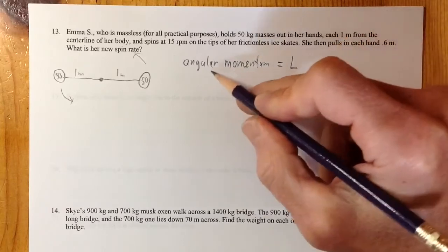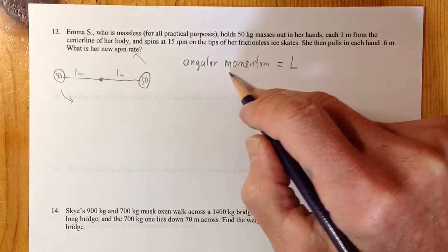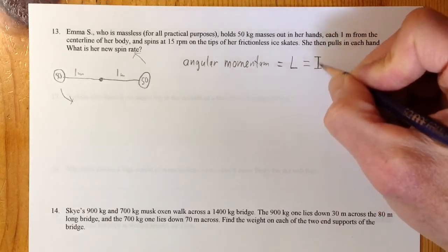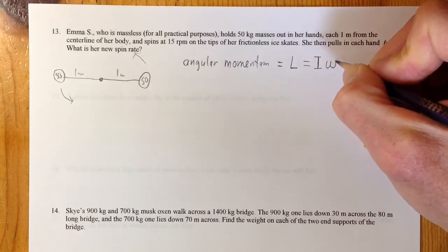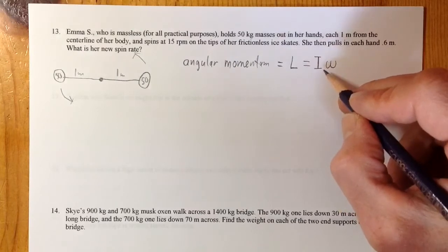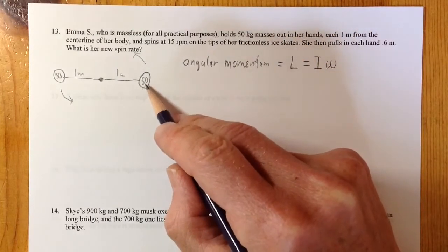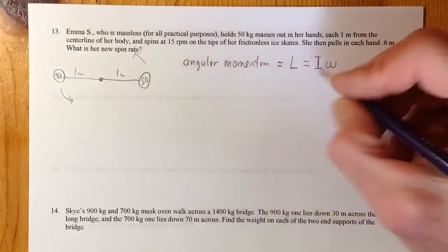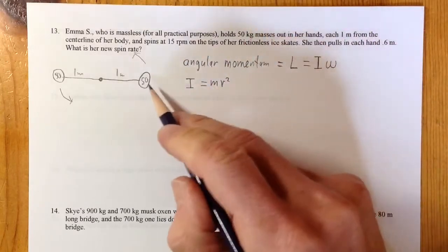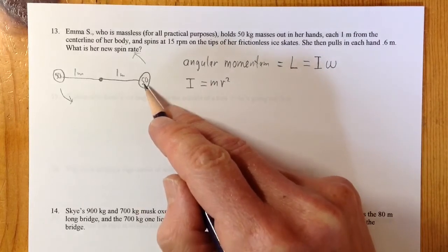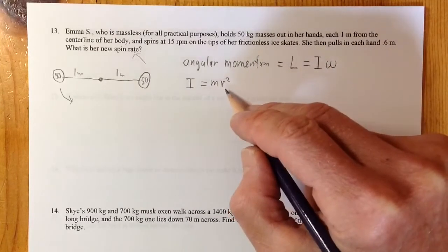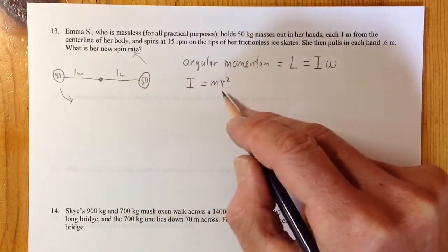She has 50 kilograms spinning at a radius of 1 meter, and there's two of them. Angular momentum — momentum you have because you're moving in a circle, you're changing your angle — is given the letter L. They didn't want to call it A or M because there's already regular momentum, so they give it the letter L. It equals the rotational inertia I times how fast you're spinning, the angular speed omega. So L equals I times omega.